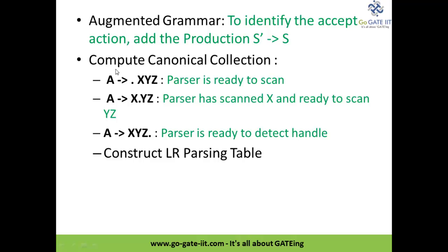The next and very important part of construction is the canonical collection item calculation — the canonical collection of LR(0) items. Note that we are considering the LR(0) parser here. The canonical collection has three stages: A → •XYZ (dot before everything, parser ready to scan), A → X•YZ (dot after X, parser has scanned X and is ready to scan Y and Z), and A → XYZ• (dot at end, parser is ready to detect the handle — this is the reduce action). With these items we generate the DFA — the finite automaton states — and construct the LR parsing table on the basis of that DFA.